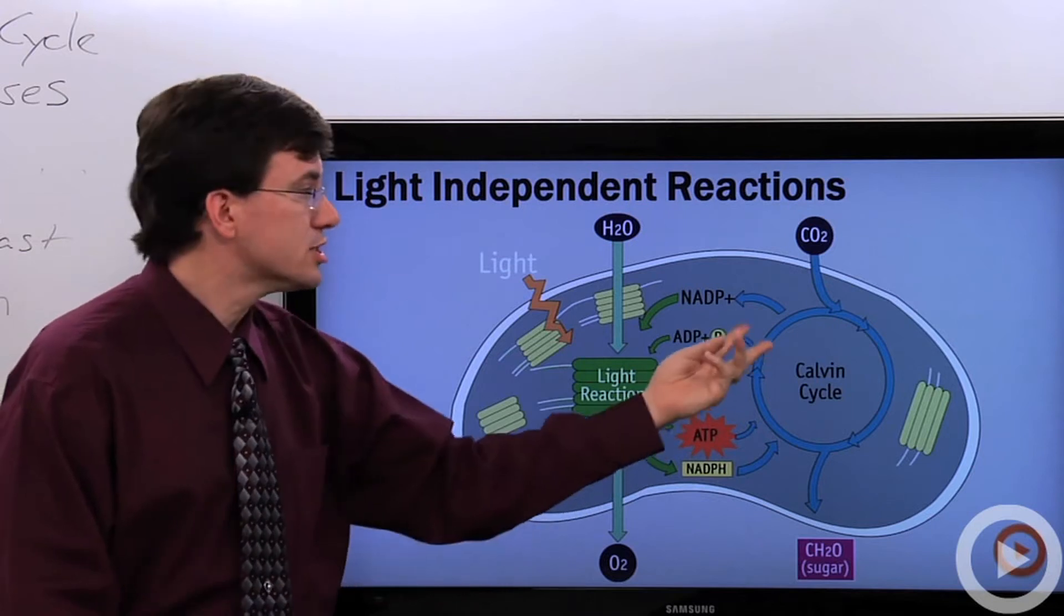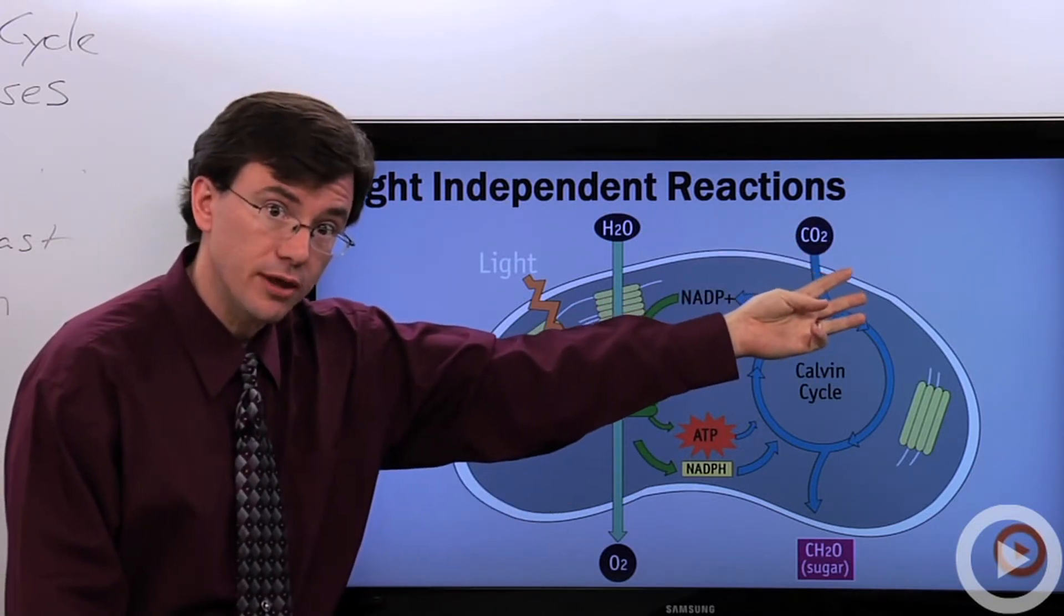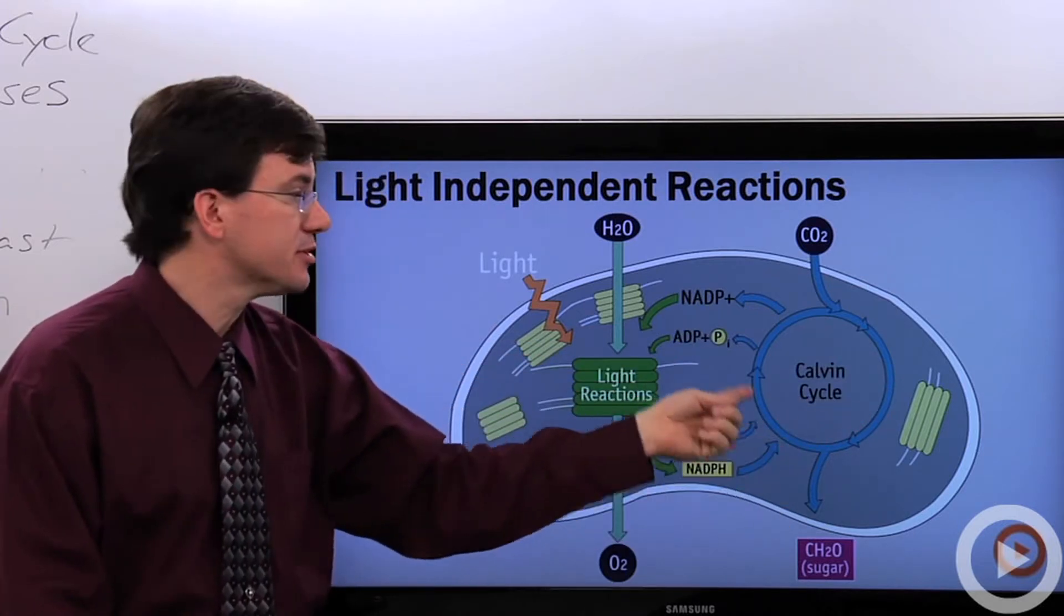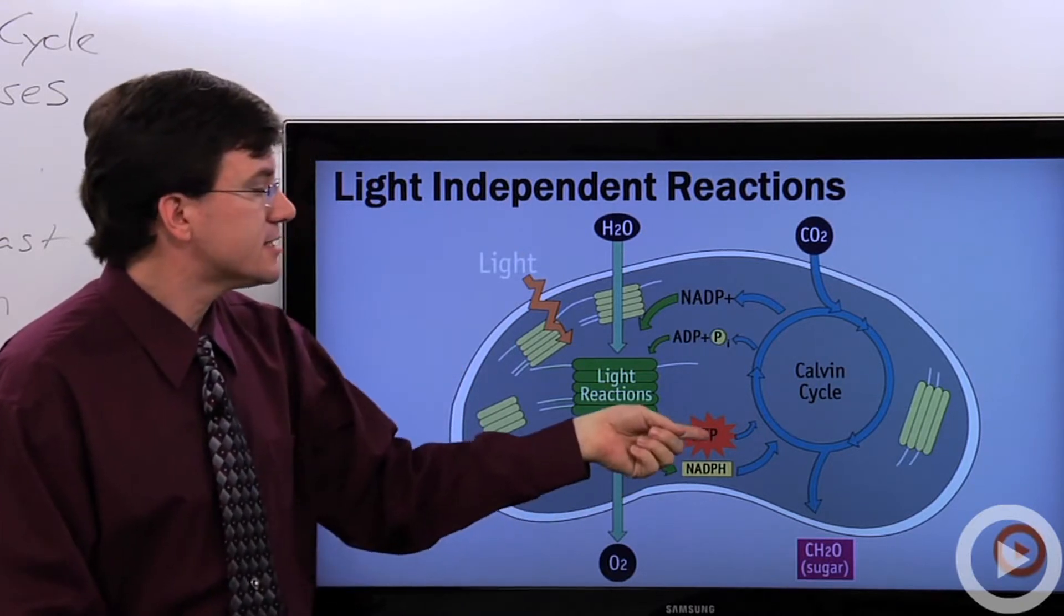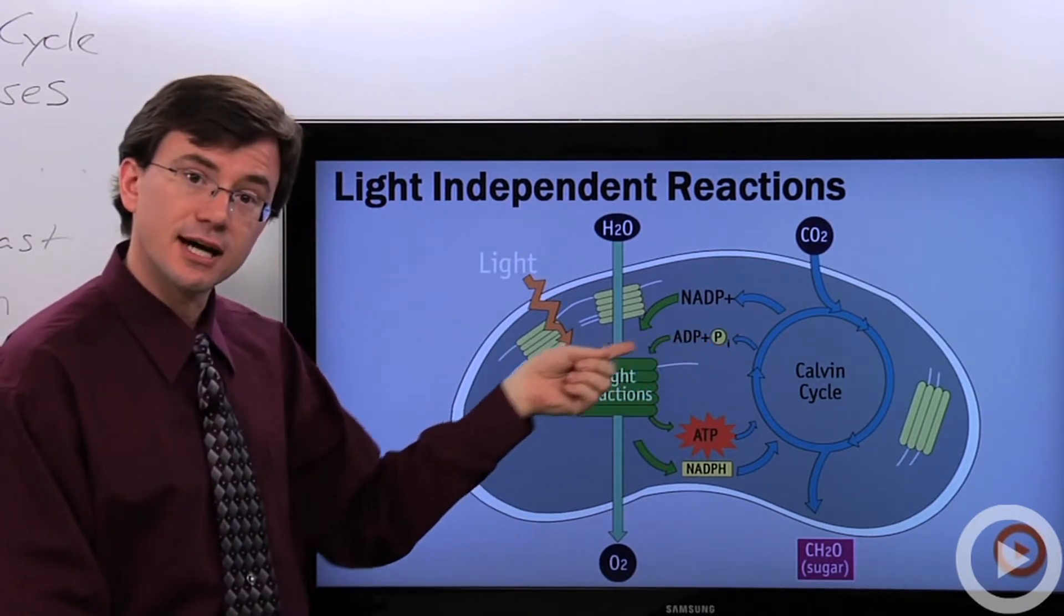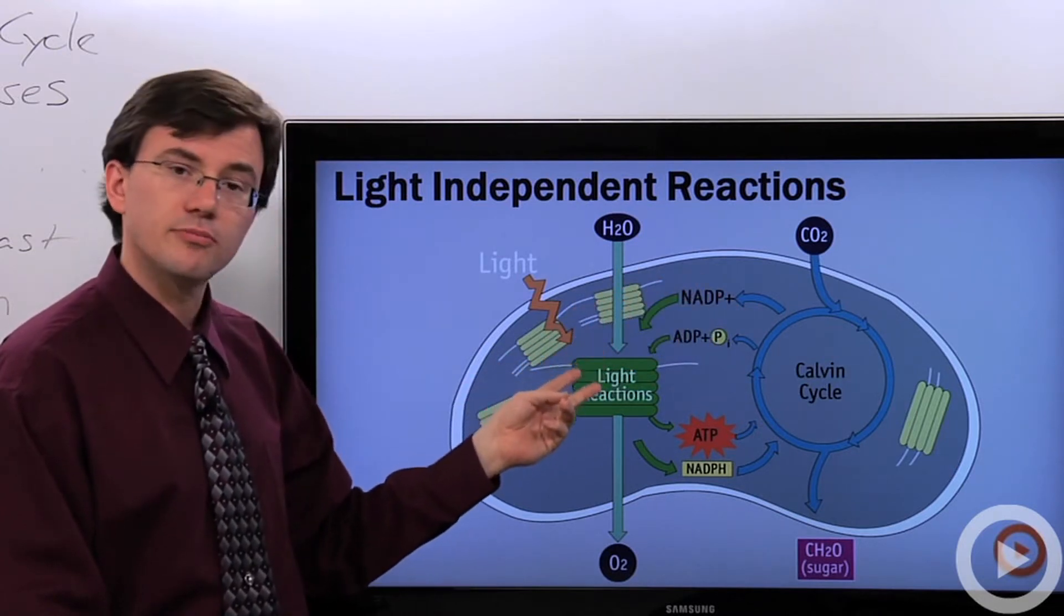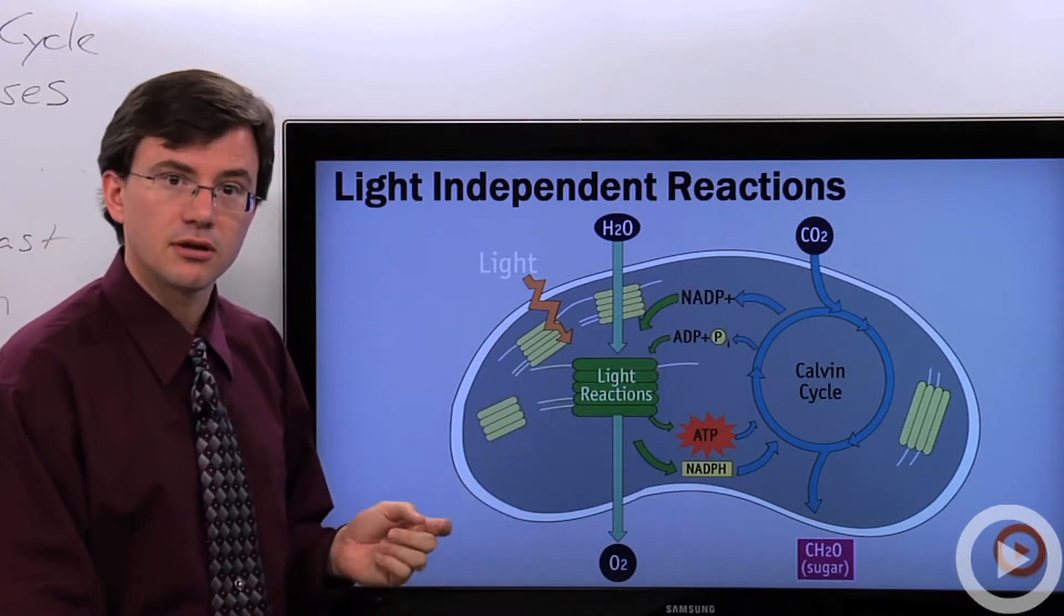You'll notice it's a cycle. So it starts off with some building materials, adds the CO2 to them, builds some glucose, but it has to recycle a lot of those materials in order to have your starting materials from the beginning again. It sends the used-up adenosine diphosphate and NADPH positive back to the thylakoid membrane where it can be recharged with energy so you can continue doing the Calvin cycle.